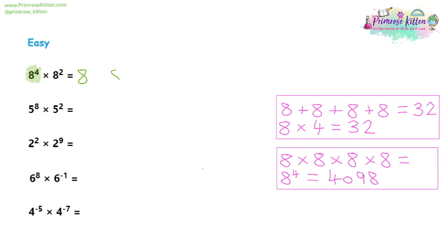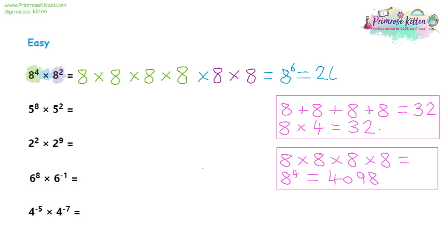So if we want to write eight to the four, we can do eight times eight times eight times eight. Then moving along, we are going to multiply that by eight to the two, and eight to the two is just eight times eight. So now we have four green eights and two purple eights all multiplied together, which gives us eight to the six. You can see the difference between the index form and the value — the index form is much shorter and clearer, whereas the value is longer and much more likely to get confused.